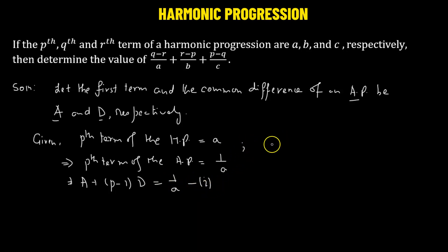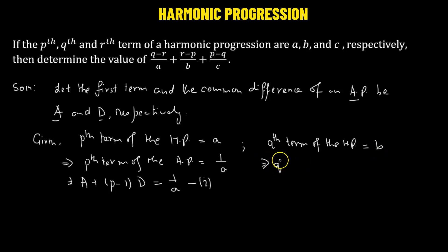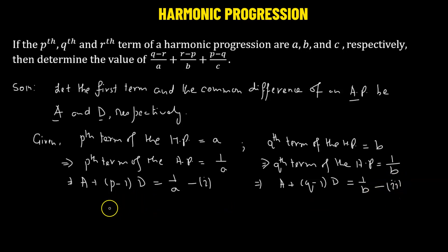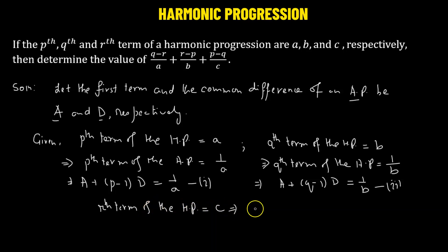The q-th term of the harmonic progression equals b, so the q-th term of the arithmetic progression is 1 over b. That gives us: A plus (q minus 1) times d equals 1 over b — equation 2. Similarly, the r-th term of the harmonic progression equals c, so A plus (r minus 1) times d equals 1 over c — equation 3.